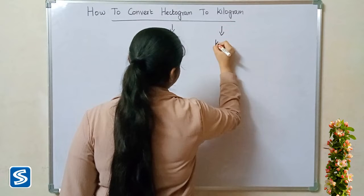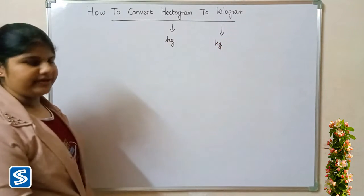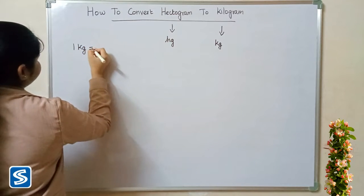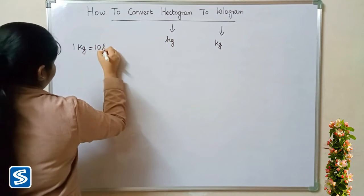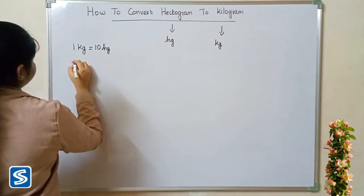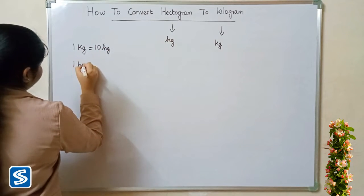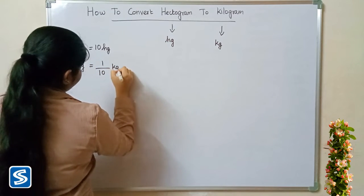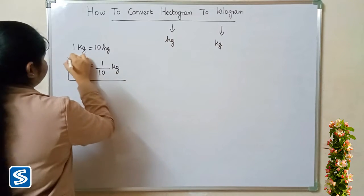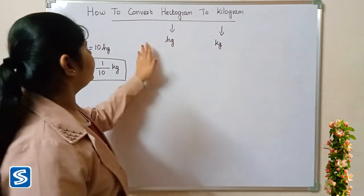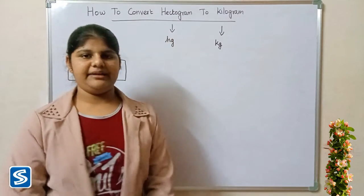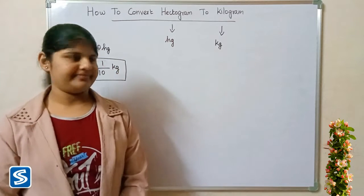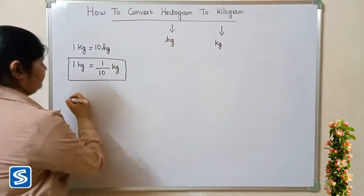The short form of kilogram is kg. We know that one kilogram is equal to 10 hectograms, so 1 hectogram is equal to 1/10 kilograms. The formula to convert hectogram into kilogram is: 1 hectogram = 1/10 kilograms. Now we will take some examples.